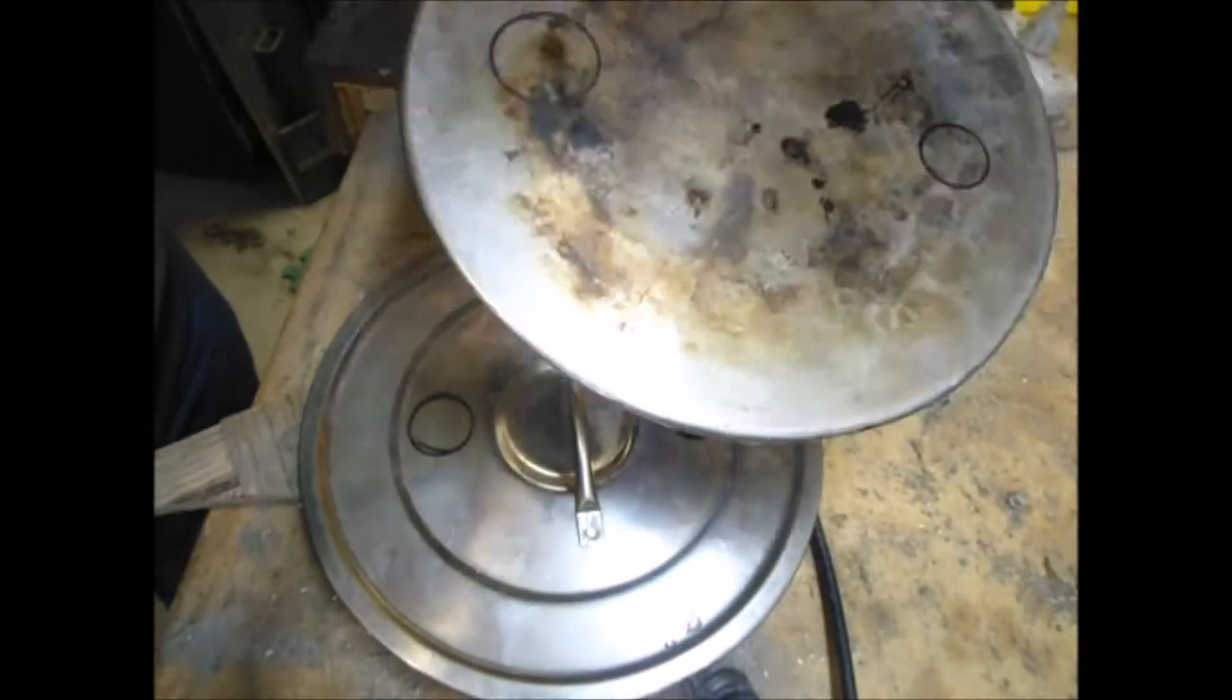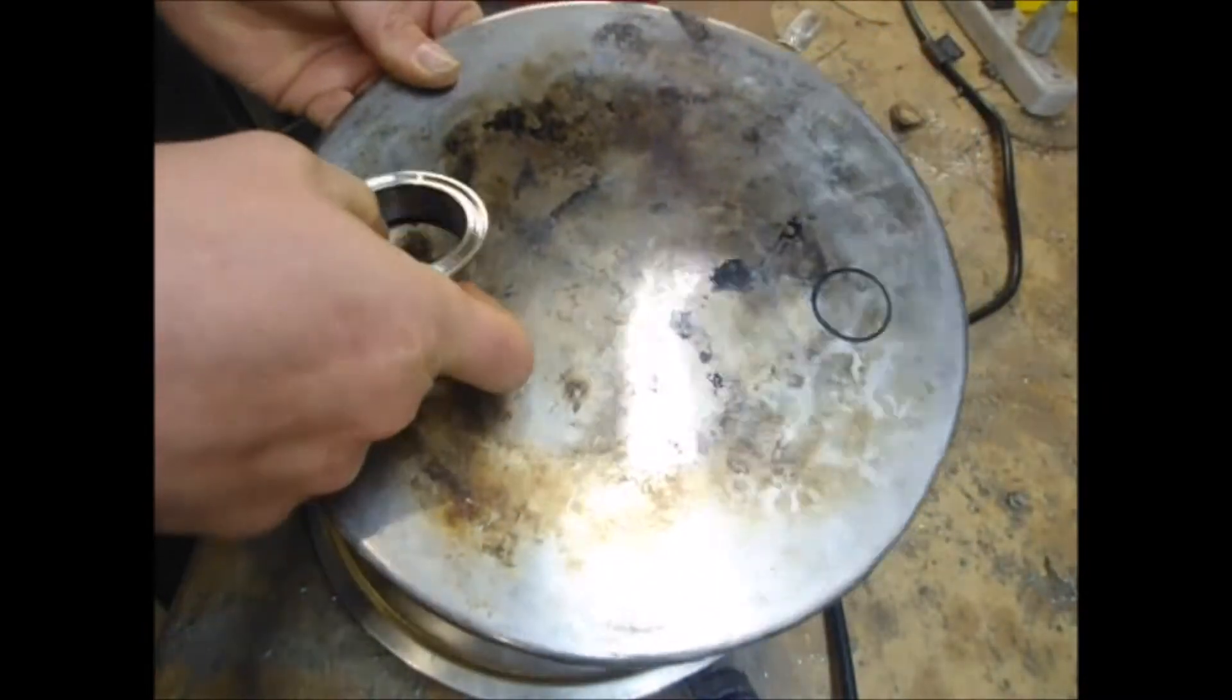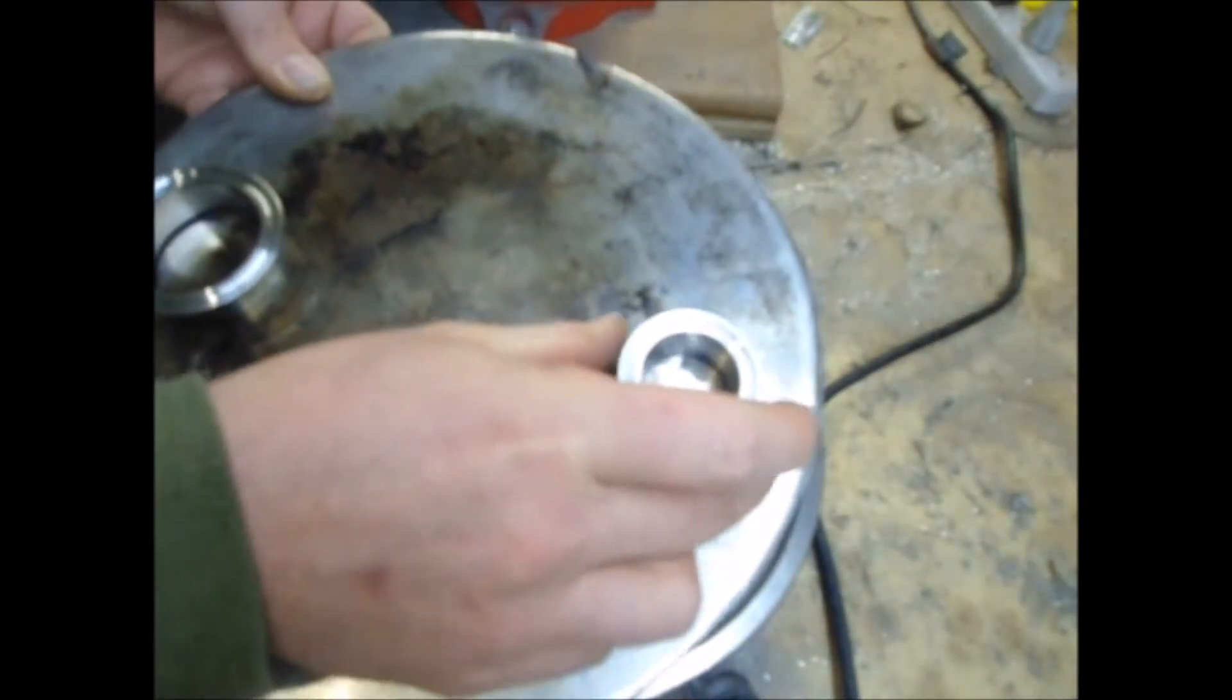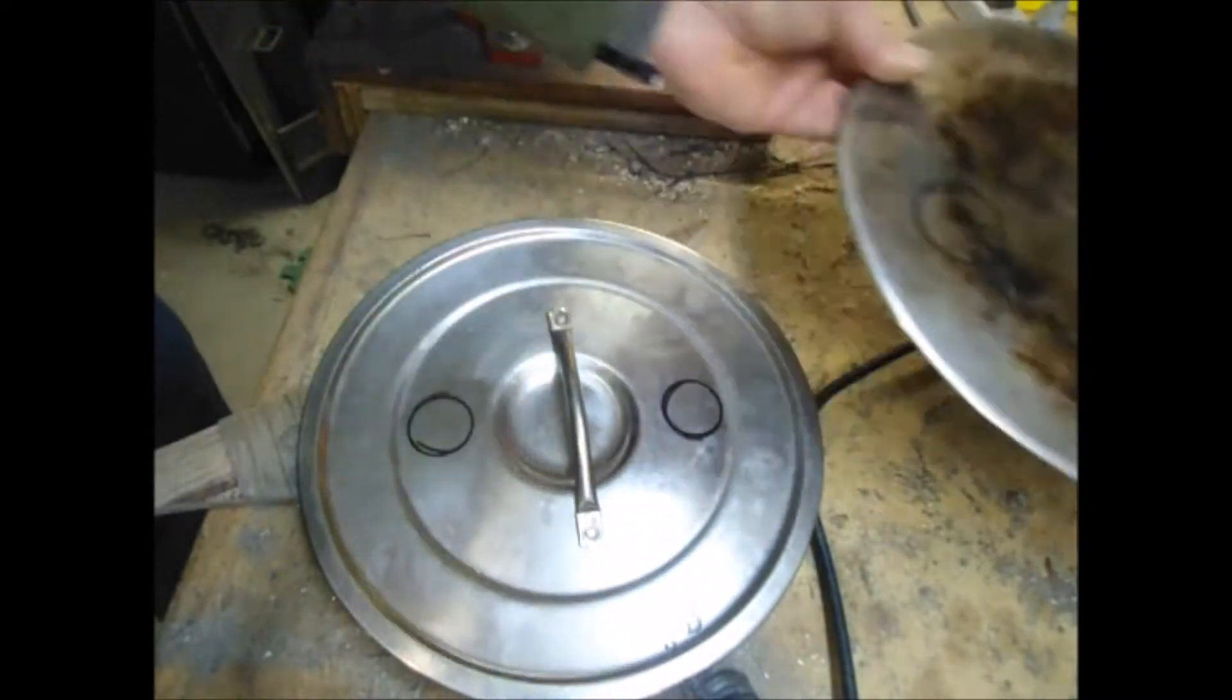But it'll serve nicely as the top of our four-gallon pot and the top of the conical. We want to drill that and open up the hole for the one-and-a-half and the two-inch tri-clamp fittings.